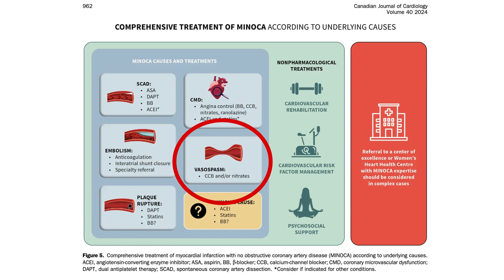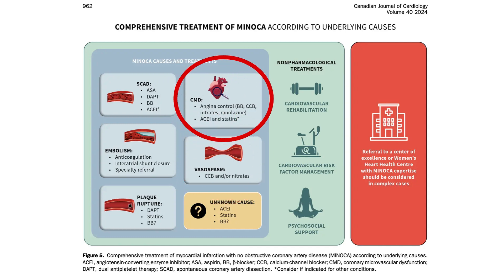For coronary spasm, we use calcium antagonists and nitrates — as described in the ANOCA episode. For coronary microvascular disease, management includes combining beta blockers, calcium antagonists, ranolazine, and other anti-anginal agents, plus improving endothelial dysfunction with statins and ACE inhibitors. For coronary embolism: anticoagulation for atrial fibrillation, valve thrombus, or intracardiac thrombus; patent foramen ovale or atrial septal defects must be closed. Refer to hematology if acquired or hereditary thrombophilia is suspected.